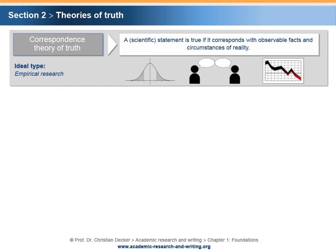Section 2 – Theories of Truth. Over the centuries, philosophers concerned with the nature of truth have developed different theories of truth. The complexity of these theories goes way beyond this course. Still, three theories shall be briefly mentioned in order to present different perceptions of the term truth. The correspondence theory of truth postulates that a scientific statement is true if it corresponds with observable facts and circumstances of reality. This theory predominantly matches and supports empirical research in which numerical and non-numerical data is collected in order to test hypotheses and thereby to support conclusions and propositions.